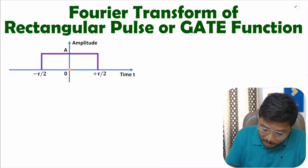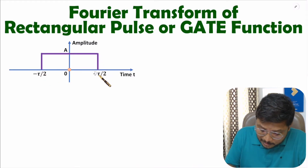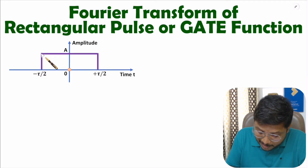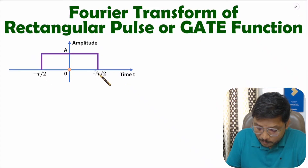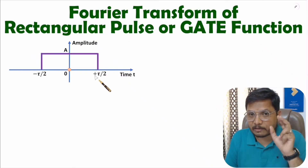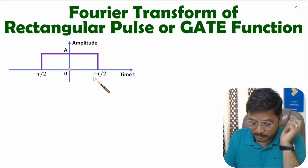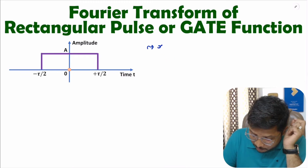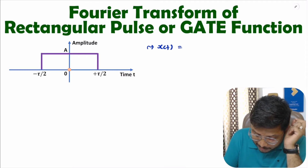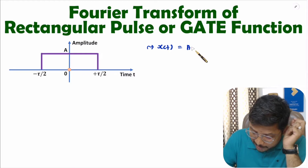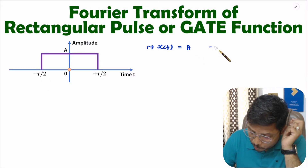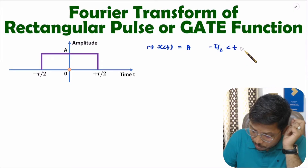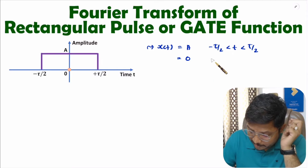You can observe here we have been given a rectangular pulse. This rectangular pulse is having magnitude A for the time interval of minus τ/2 to plus τ/2, and it is having value 0 elsewhere.